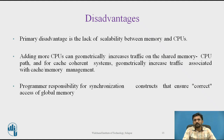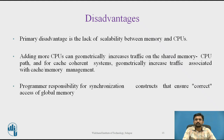The primary disadvantage is the scalability issue between the memory and the CPU. Adding more CPUs can geometrically increase traffic on the shared memory-CPU path, and for cache coherent systems, it geometrically increases traffic associated with cache and memory management. Another disadvantage is programmer responsibility for synchronization constructs that ensure correct access of global memory. These disadvantages will be compared against the distributed memory model in the next module, to see how they can become advantages there.